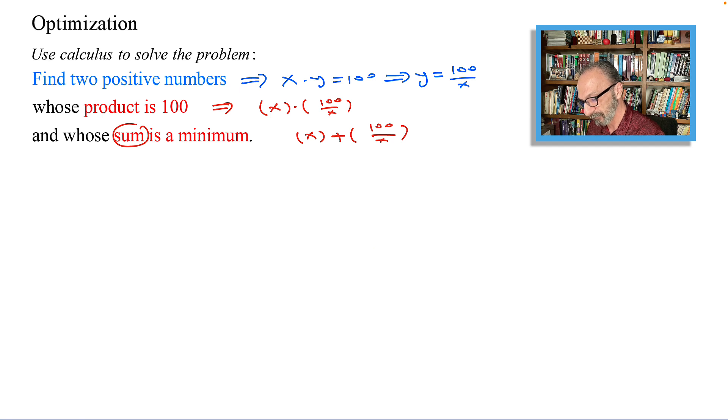So to get started, this is just an introduction. We have the following: the two numbers are x and 100 over x such that x is greater than zero, and we need to minimize the sum. So let's call that x plus 100 over x. Let's have it being called our function f of x.